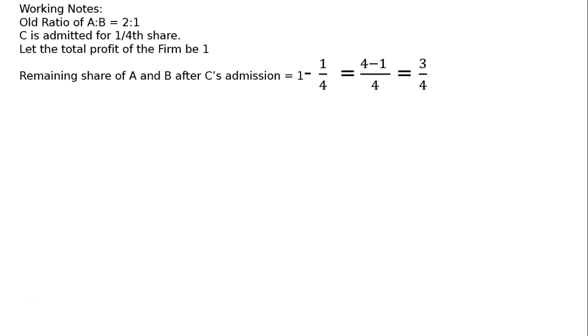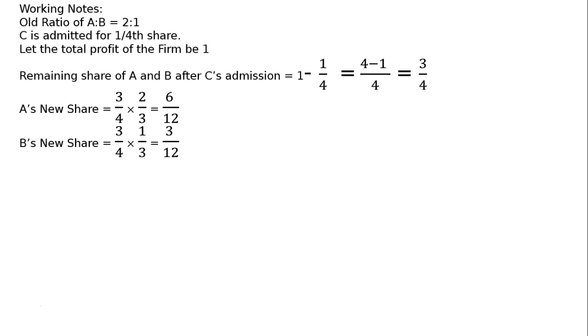Working notes: old ratio of A to B is 2:1. C is admitted for 1/4 share. Let the total profit of the firm be 1. Remaining share of A and B after C's admission is equal to 1 minus 1/4, which equals 3/4. The 3/4 remaining share will be distributed among A and B in the ratio of 2:1 — 2/3 belongs to A and 1/3 belongs to B.